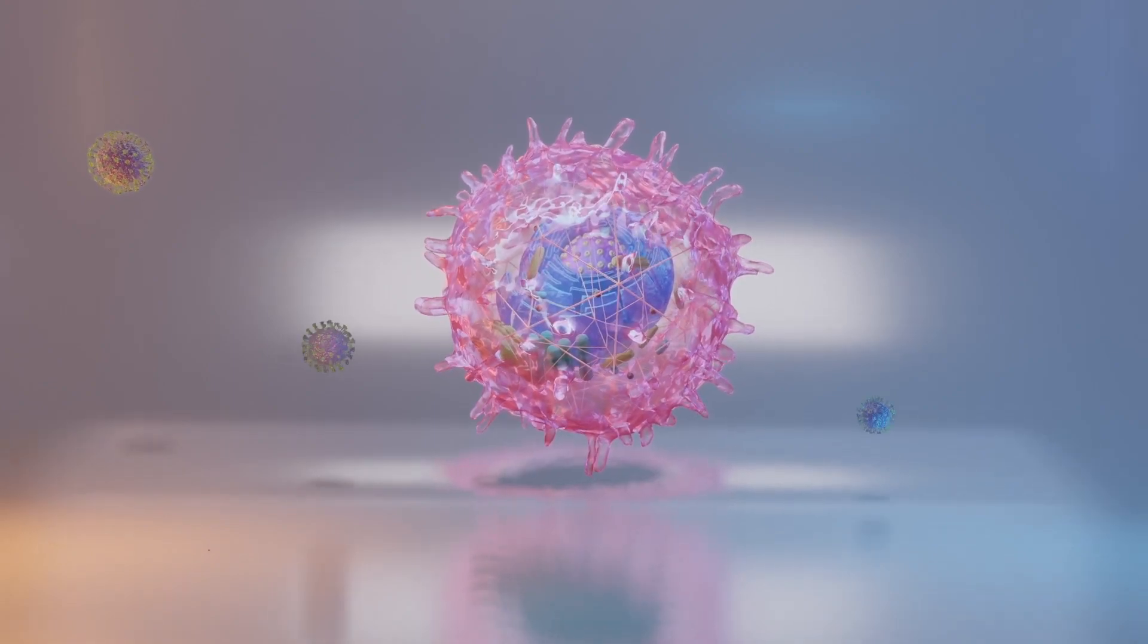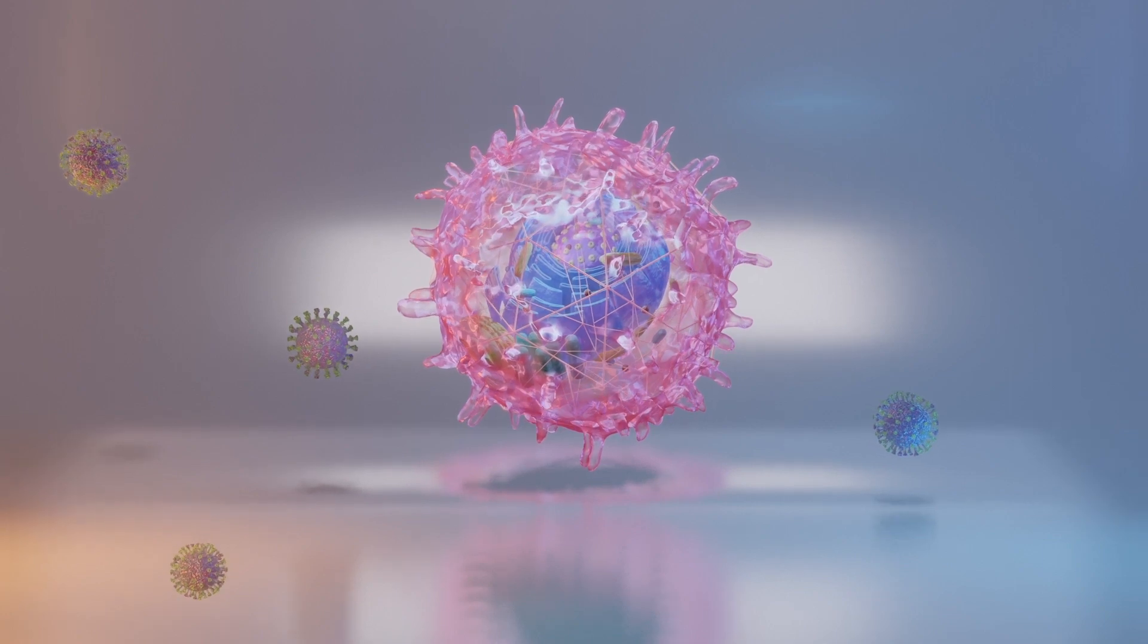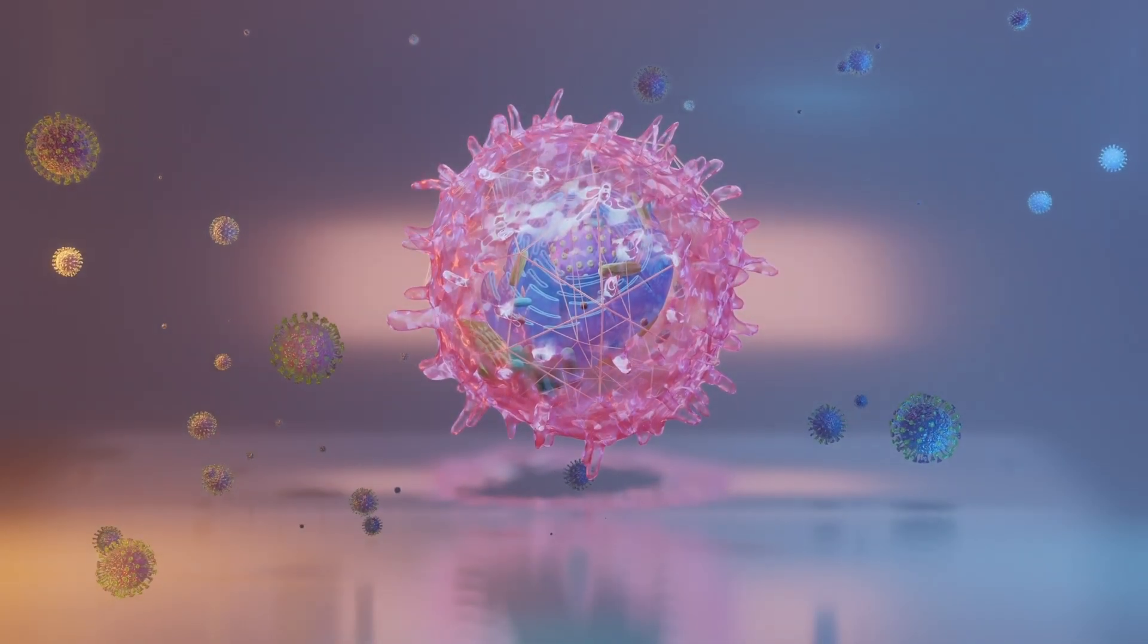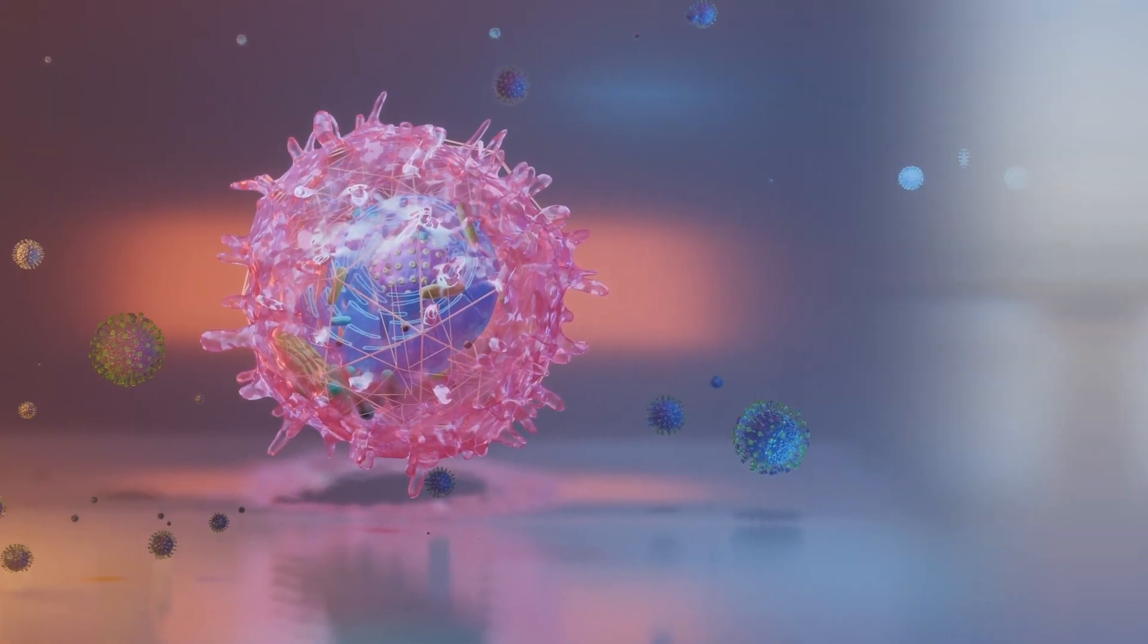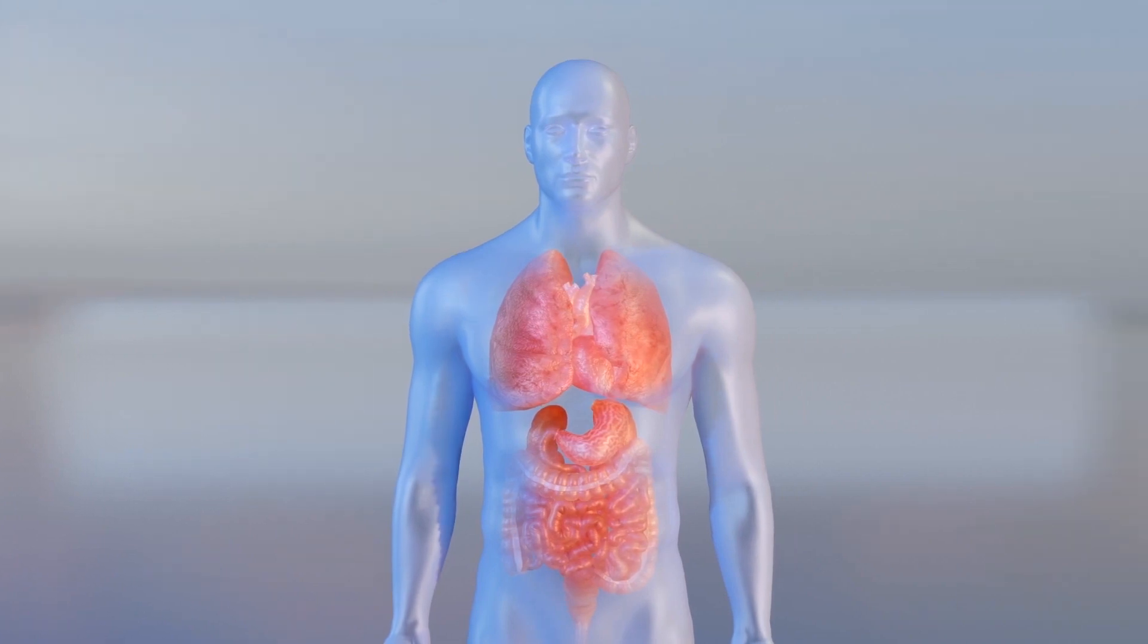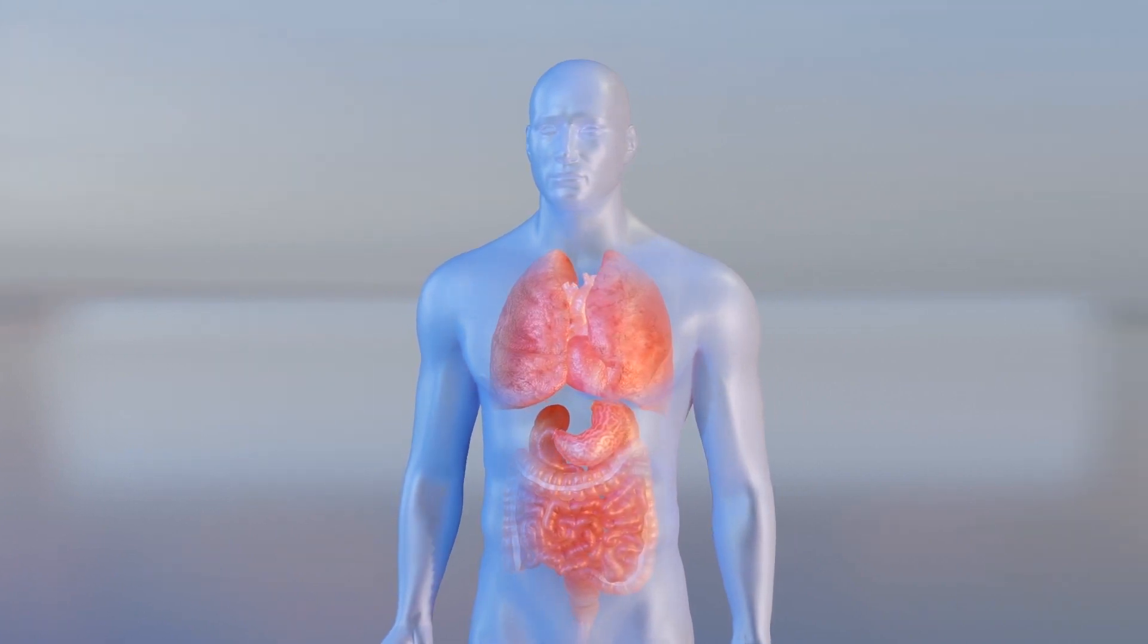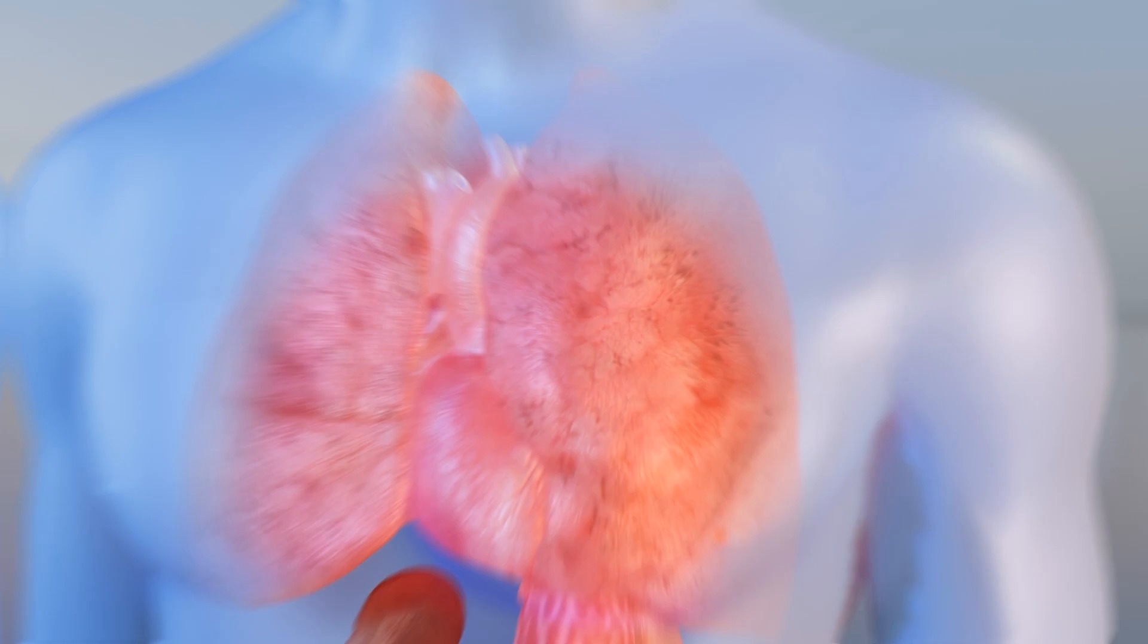Researchers from China have used cryo-electron microscopy to show how SARS-CoV-2 infects humans. The study published in Science says the virus targets a type of receptor found on human cells in the lungs, heart, kidneys and intestines.